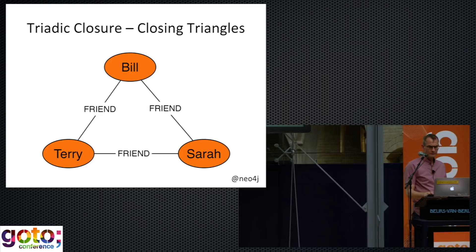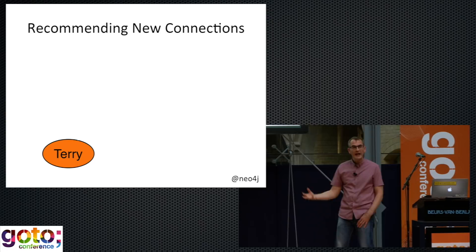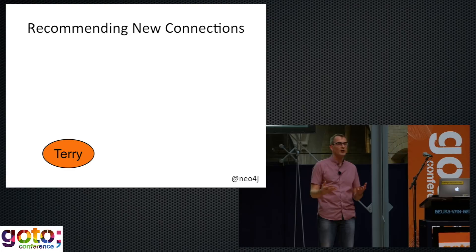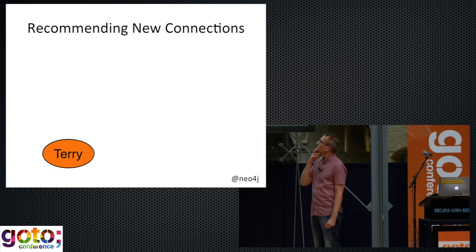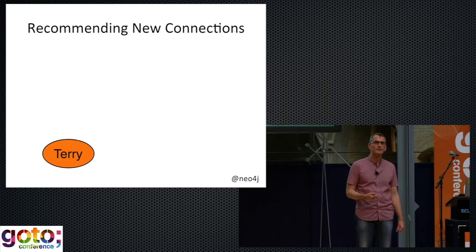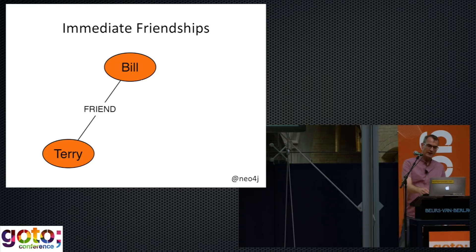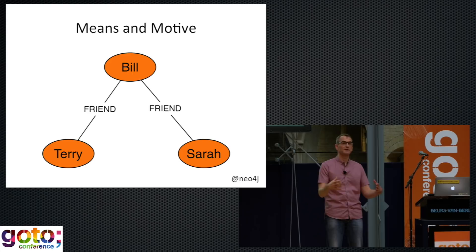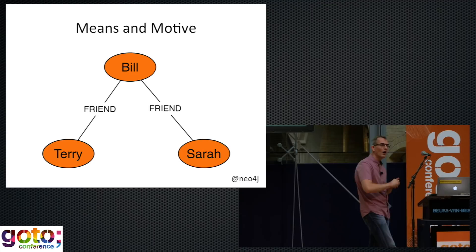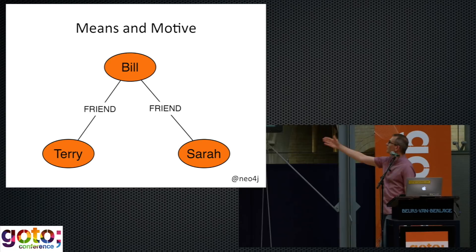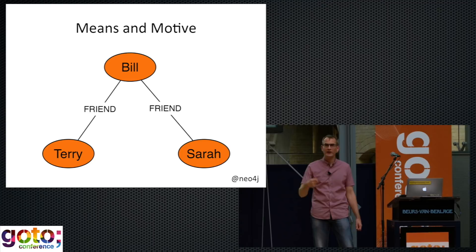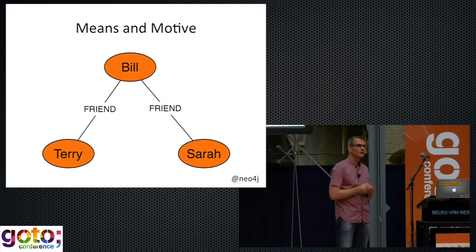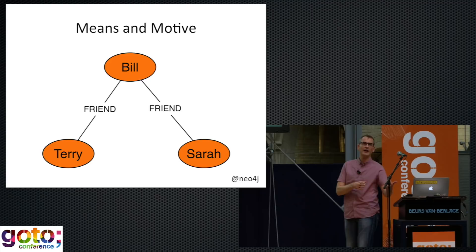So that's triadic closure — a very commonly observed behavior within networks, in particular social networks and other networks where there's some kind of human agency. We can take this behavior and effectively use it as a very simple predictive tool. Here's Terry with a friend, Bill, who has another friend, Sarah. Instead of waiting for these two people to perhaps meet one another, why don't we suggest that they get to know one another — recommend that Terry meet Sarah? You see this all the time on Facebook and Twitter: 'these are the people you might want to connect with.' You see it in recommendations engines: 'people who purchased these things also purchased that.' We're identifying opportunities for closing the triangle.